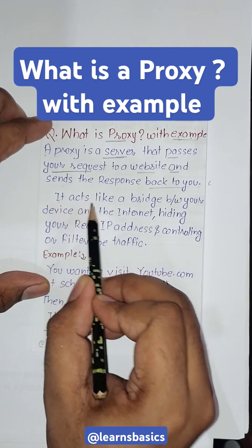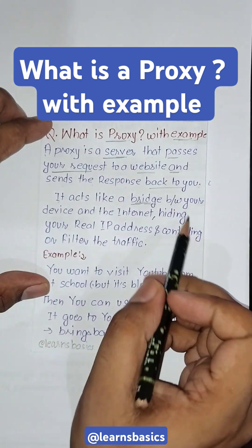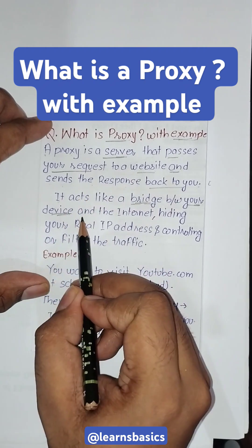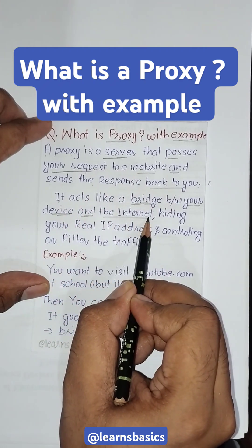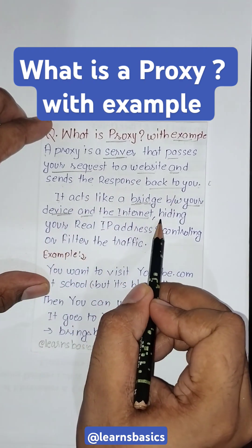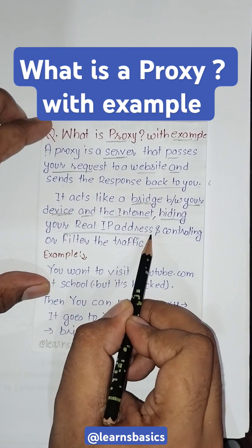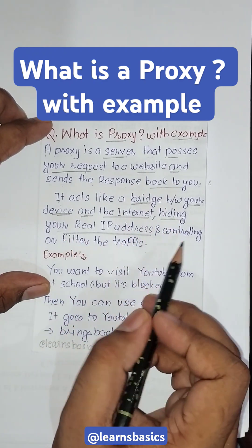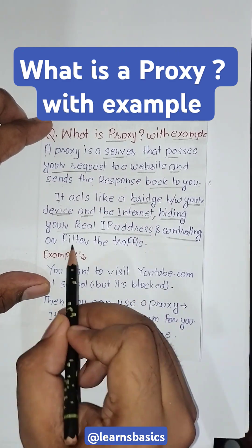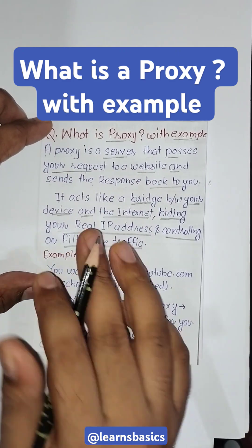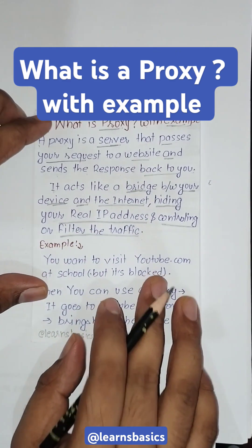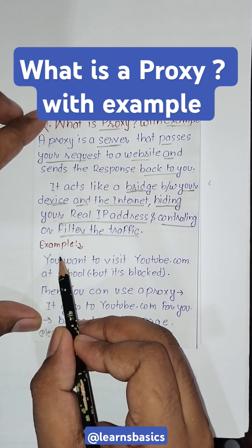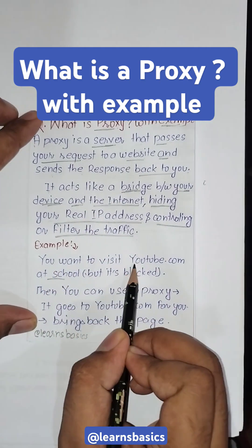A proxy acts like a bridge — an intermediate bridge — between your device, meaning your browser, and the internet. It does this for hiding your real IP address or real identity, and for controlling or filtering the traffic. Here we can see the example: in your school, youtube.com is blocked.